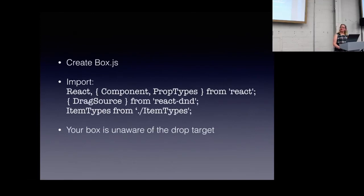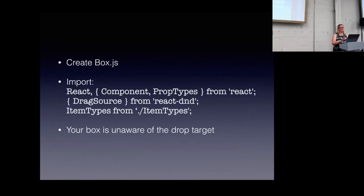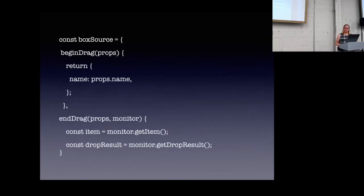In our draggable item component, which we're calling Box, we're going to import DragSource from react-dnd and the item types we just made. You'll notice we're not importing the drop target or the container — your draggable item doesn't need to know about those. We create a const where we have beginDrag, which grabs the properties we want to be dragging with our item. In this case it's just the name.